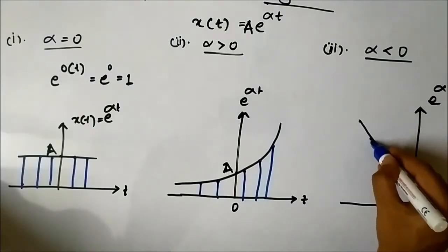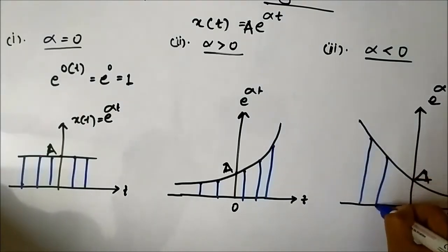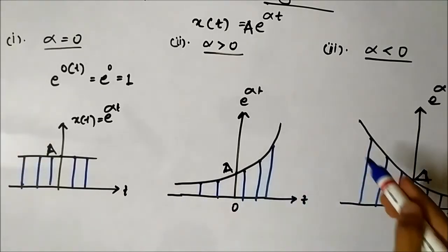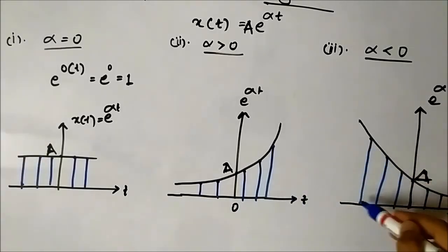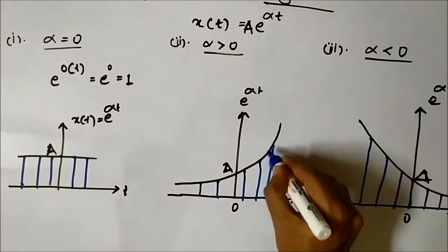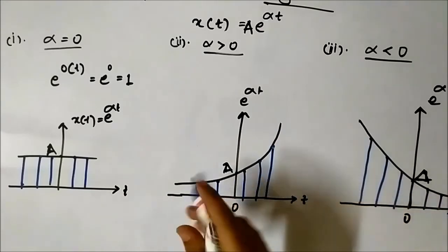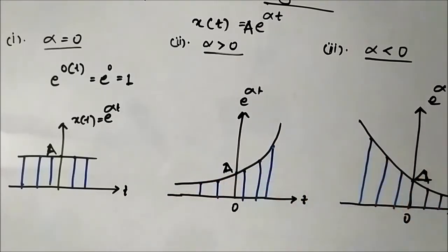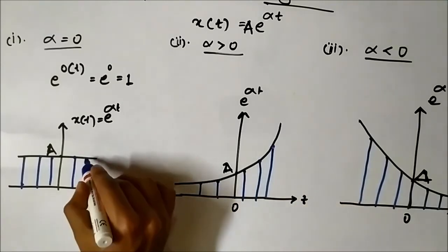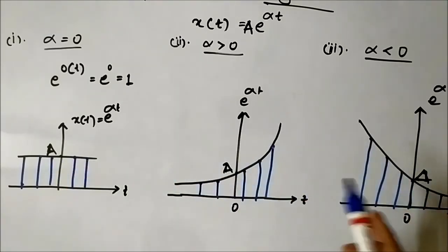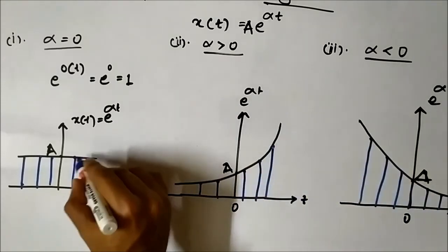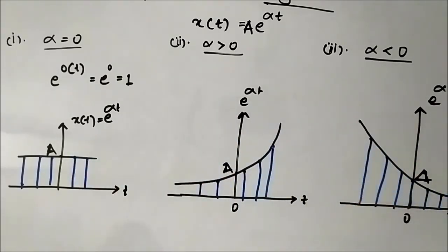The signal will look like this in discrete time. We take the amplitude of the signal at different distinct points located at equal distances from each other. This is the discrete time representation of the exponential signal — if we remove the connecting lines, the straight vertical lines of different amplitudes denote the discrete time representation of the exponential signal.